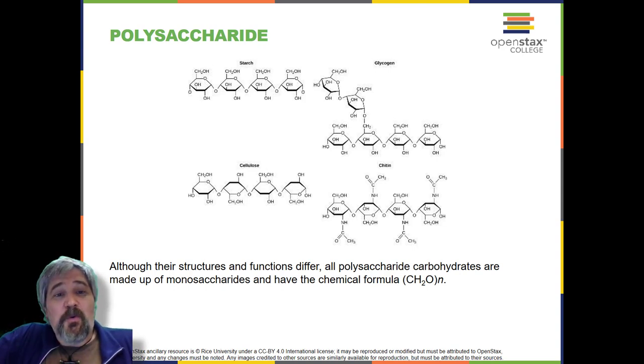Glycogen is the storage form of glucose in humans and other vertebrates, and is made up of monomers of glucose. Glycogen is the animal equivalent of starch, and is a highly branched molecule usually stored in liver and muscle cells. Whenever glucose levels decrease, glycogen is broken down to release glucose.